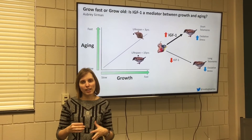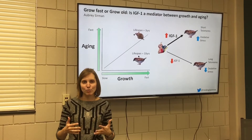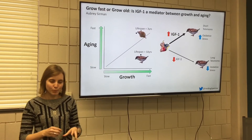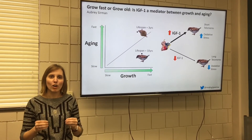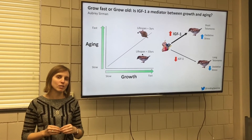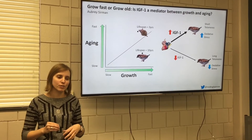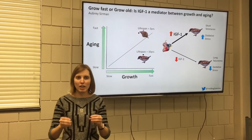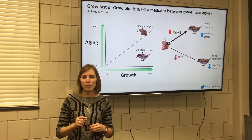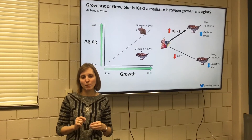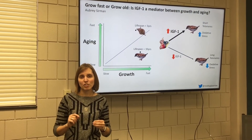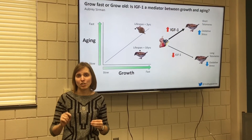Oxidative stress happens when your cells produce energy. When this occurs, they also produce these harmful byproducts called free radicals. Your body can counteract these free radicals with antioxidants, but when it can't keep up, that can lead to cell damage and increased aging.